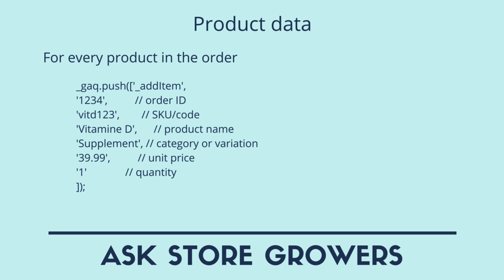Then for every product in the order we're going to create something similar. We're going to say which order it belongs to, what our SKU code is, what the product name is, and what category or variation it is. The variation could be — if you're selling a sweater for example — it could be a green medium sweater.